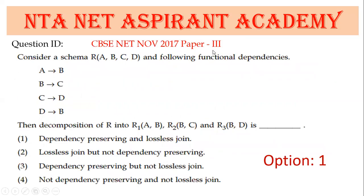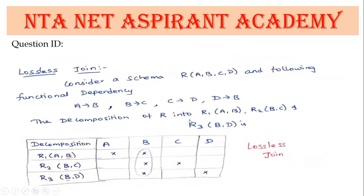This question is from November 2017, Paper 3. Functional dependencies and decomposition are given. Checking dependency preserving: A→B is matched in one decomposition, B→C is also matched. So at least one dependency is preserved — this decomposition is dependency preserving. For lossless join: R1(A,B), R2(B,C), R3(B,D) — B is the common element in all three decompositions, so this is a lossless join.